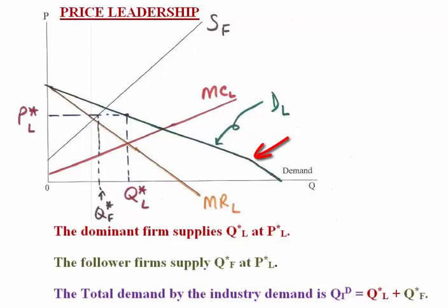Notice that there is a kink in the leader's demand curve, though this turns out not to be consequential. What it explains is that there is a lowest possible price at which the followers will supply. Once the followers are supplying zero, the original industry demand curve obtains. We see the leader choosing MR equals MC, obtaining Q* and P*. Following the follower's supply curve up to price P* gives us the quantity the followers are willing to supply. The aggregate quantity supplied is the sum of the followers' and the leader's quantities, which lies on the original industry demand curve as an equilibrium.